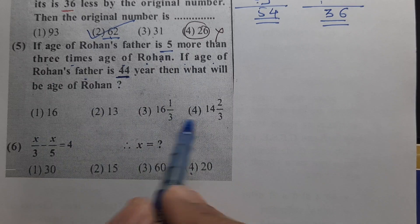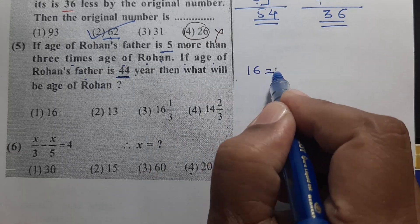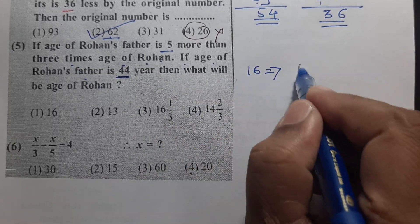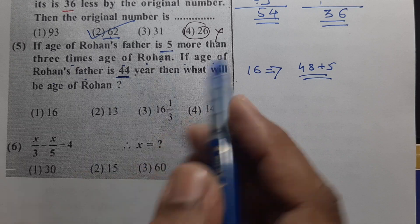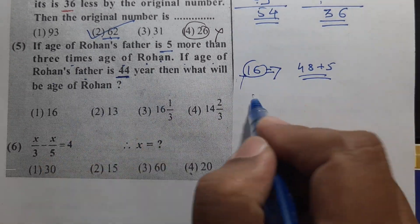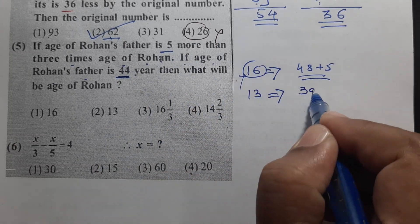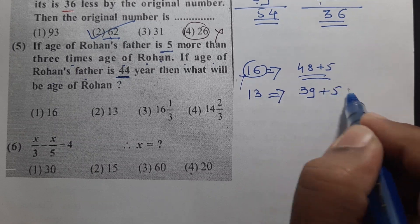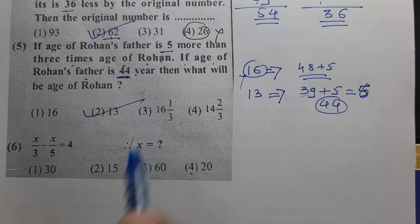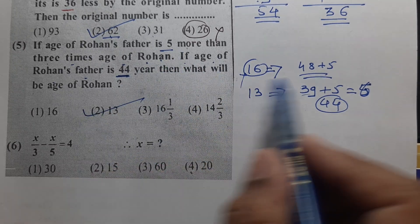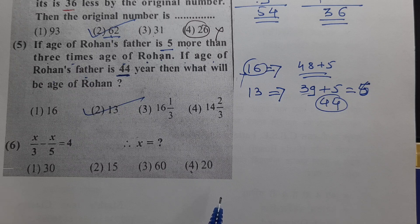Suppose Rohan's age is 16: father's age would be 3 times 16 plus 5 equals 53. That is not 44. Suppose Rohan's age is 13: father's age is 3 times 13 plus 5 equals 39 plus 5 equals 44. This is correct. So Rohan's age is 13.